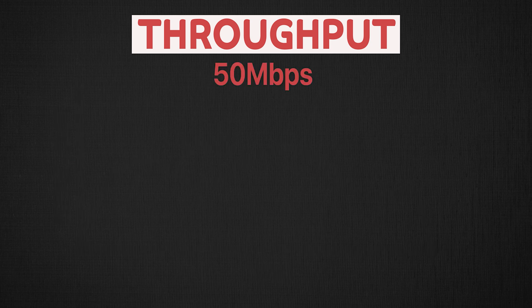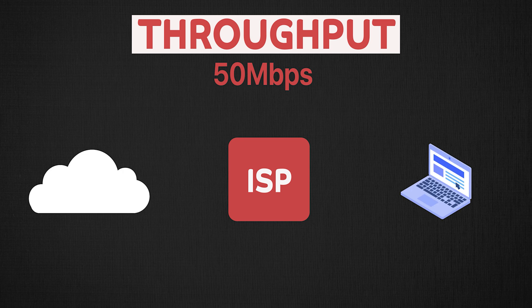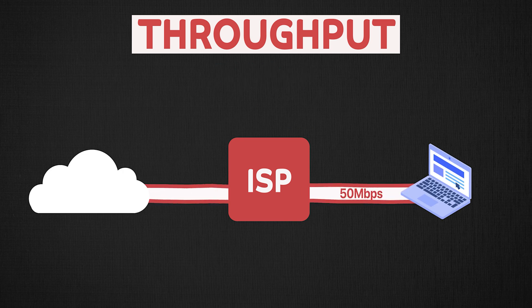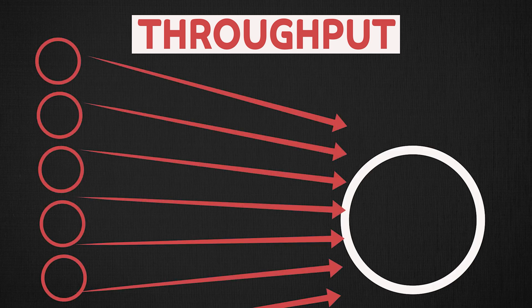Your internet download speed might be 50 MBPS, meaning your ISP can transfer 50 megabits of content per second to you over your network. Another example is how many requests your server can process in a second, or HTTP requests per second. If there are way too many requests coming to your server in a given amount of time, it can affect the server throughput by making it slow.